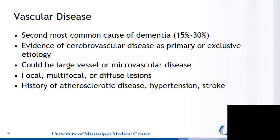Vascular disease is the second most common cause of dementia, representing about 15 to 30% of cases. There must be evidence of cerebrovascular disease as the primary or exclusive etiology. There could be large vessel or microvascular disease, with focal, multifocal, or diffuse lesions. Typically, there is a history of atherosclerotic disease, hypertension, and stroke.